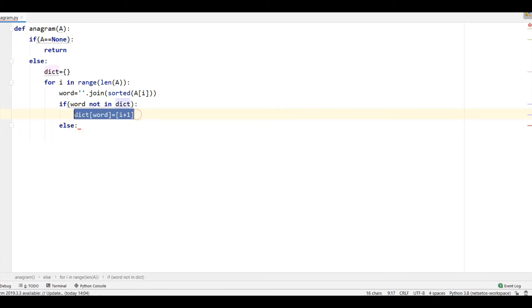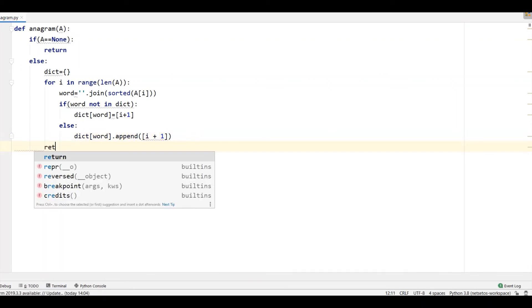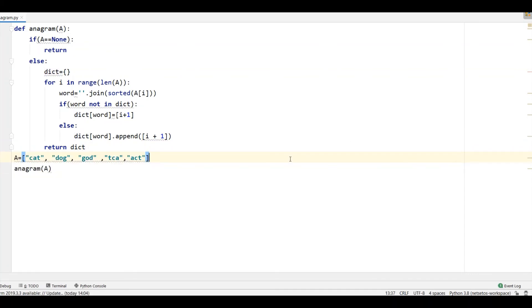Simply, it will append i plus 1 in dict word. So, I will write dict word dot append i plus 1 and then we will return this dictionary. And for running the function, I need to call this function print. So, here I will write print.